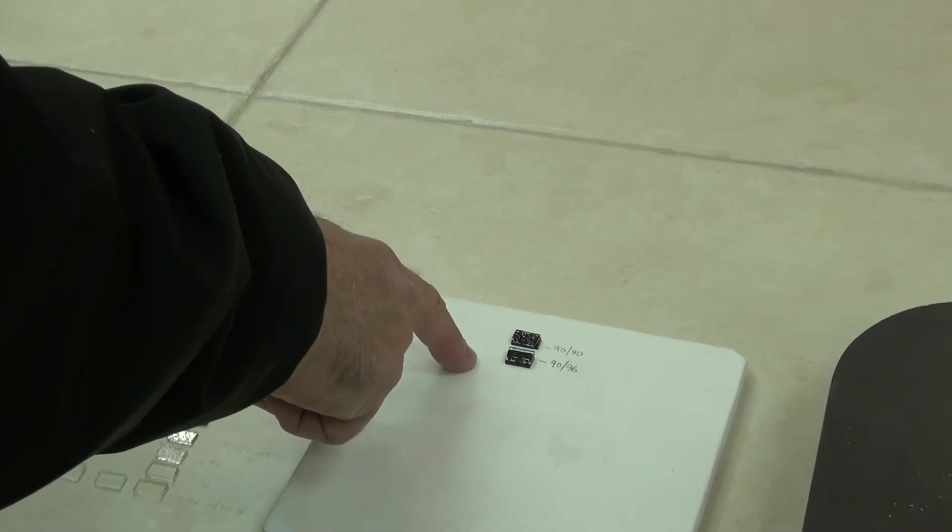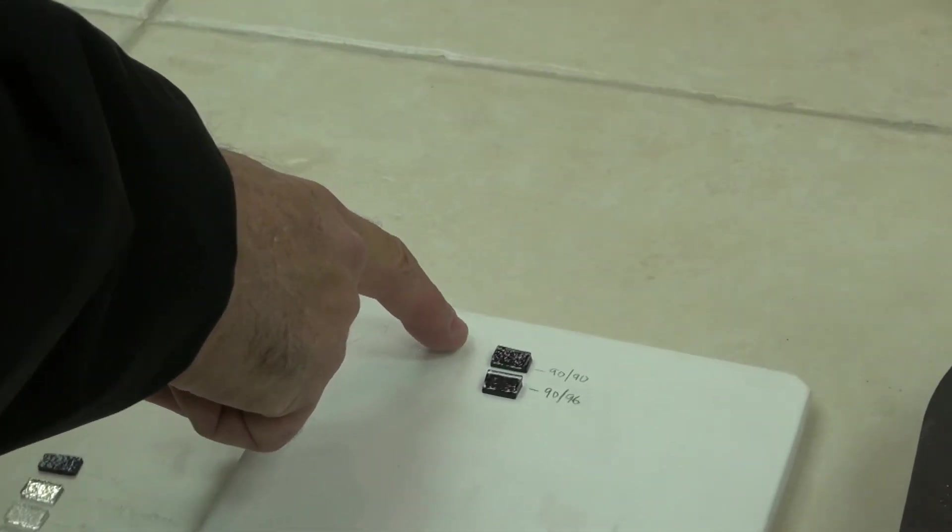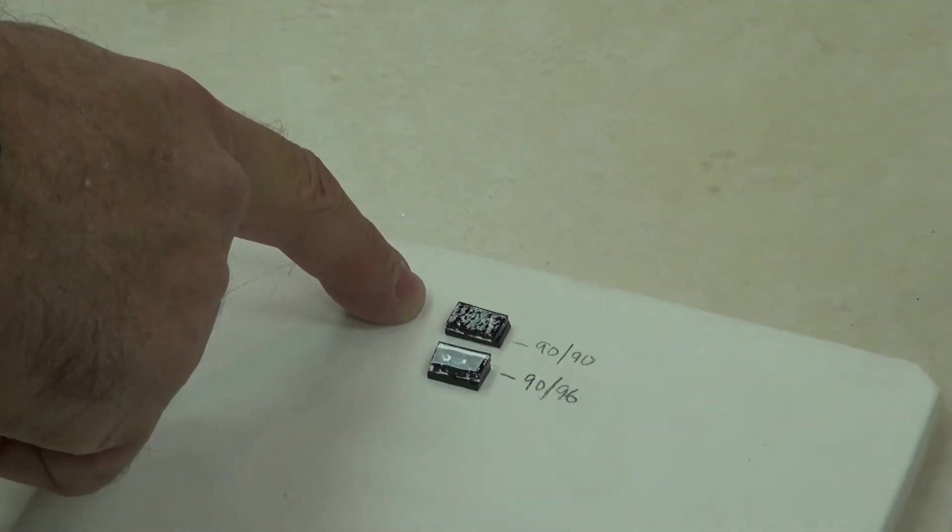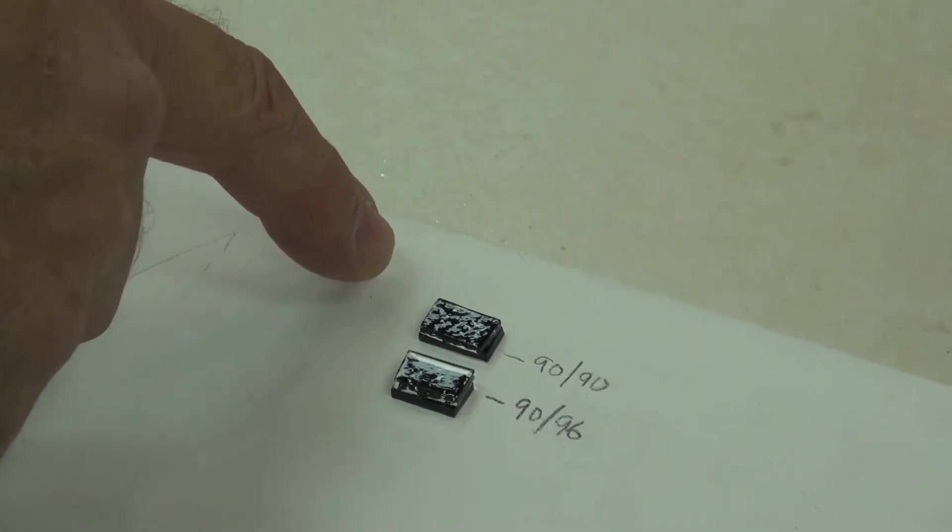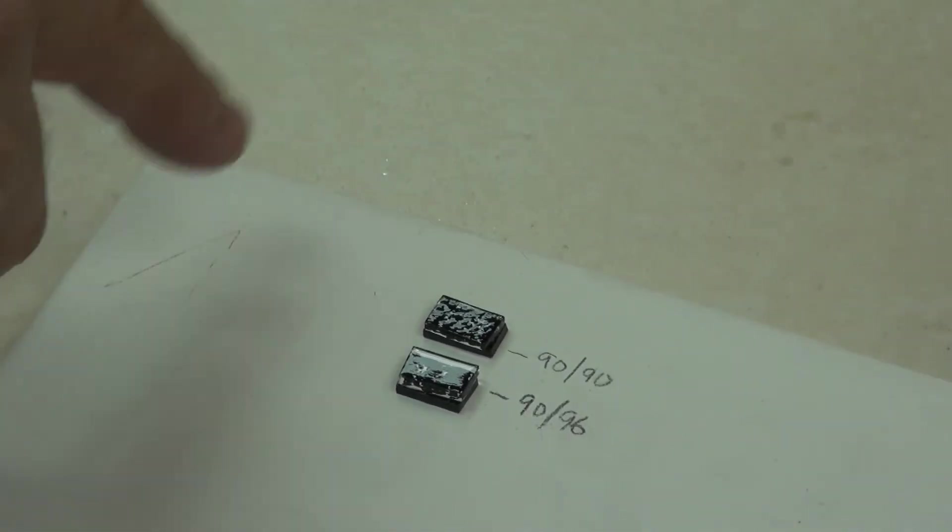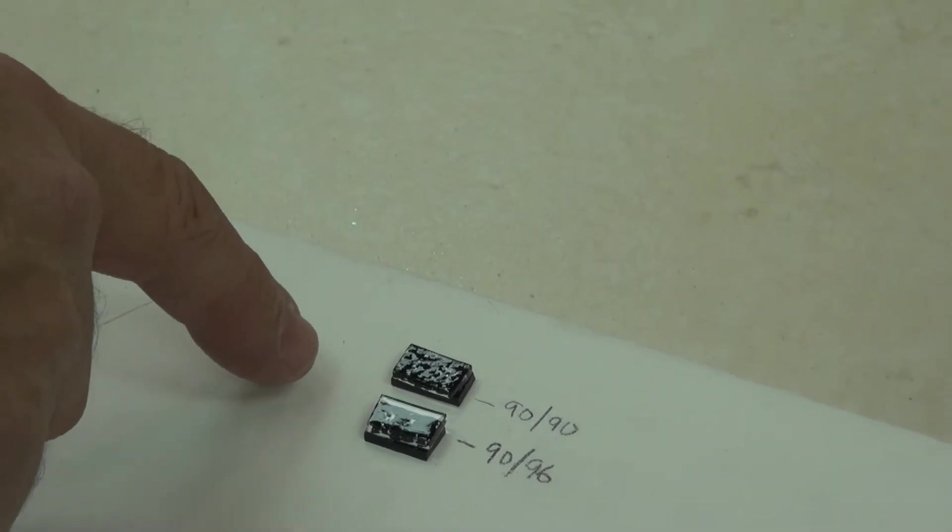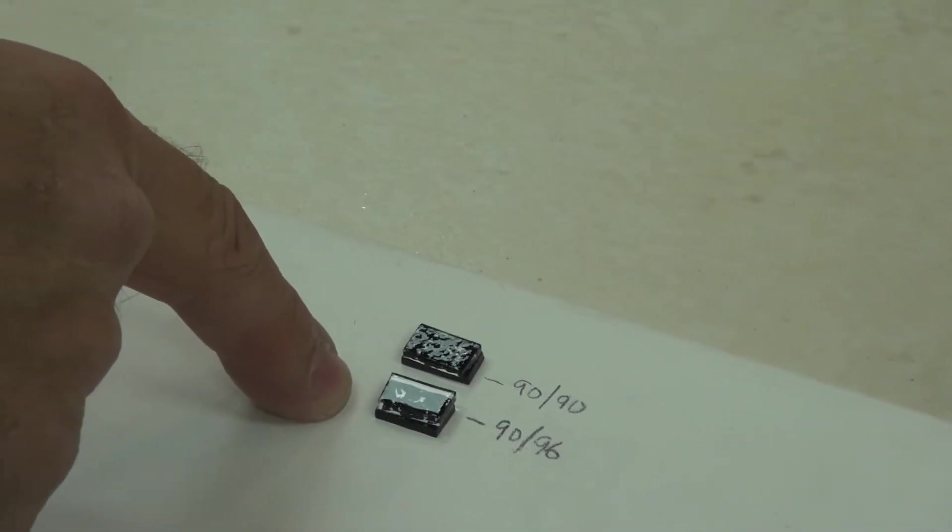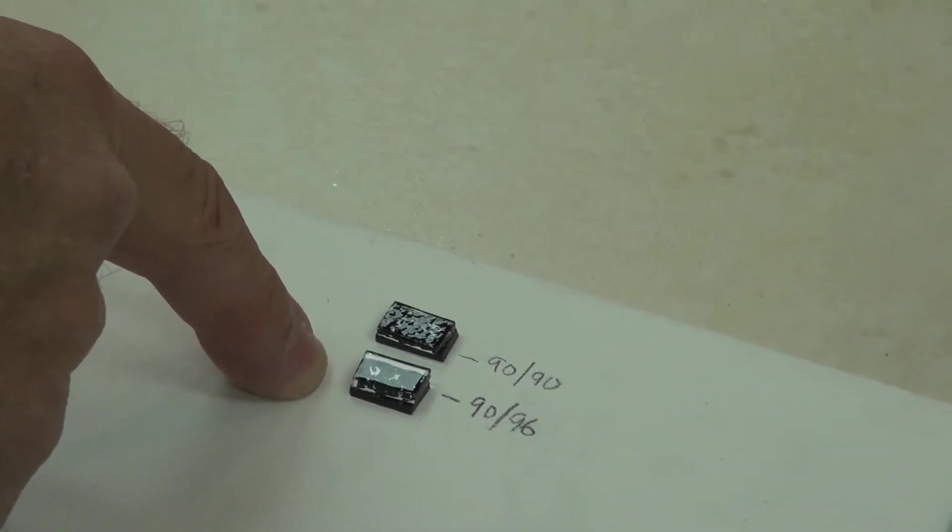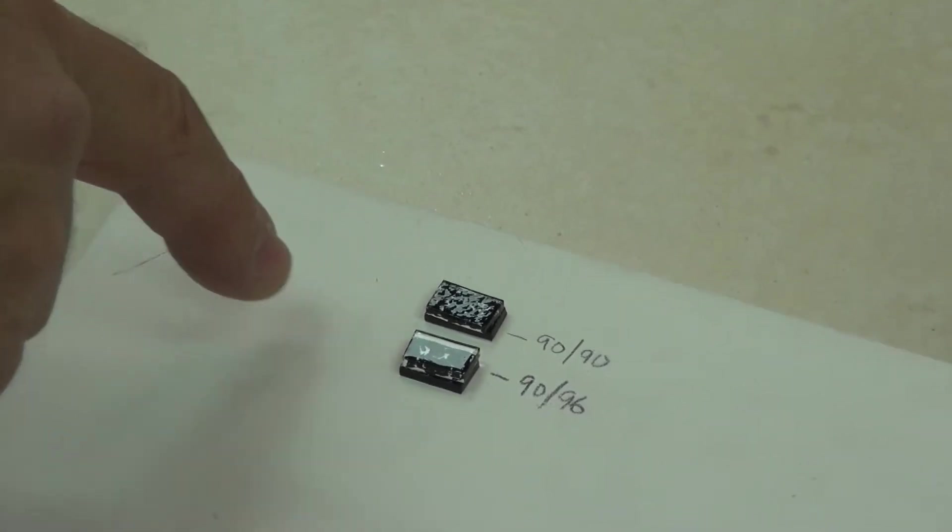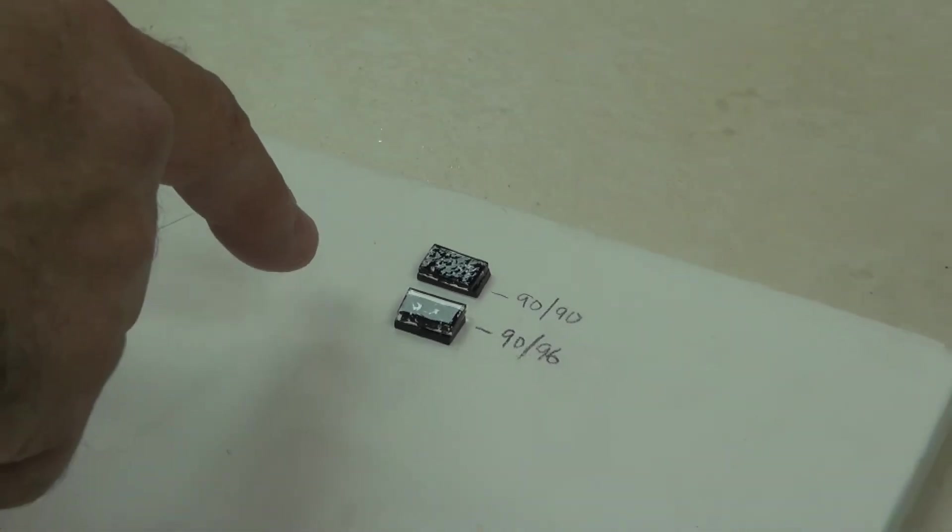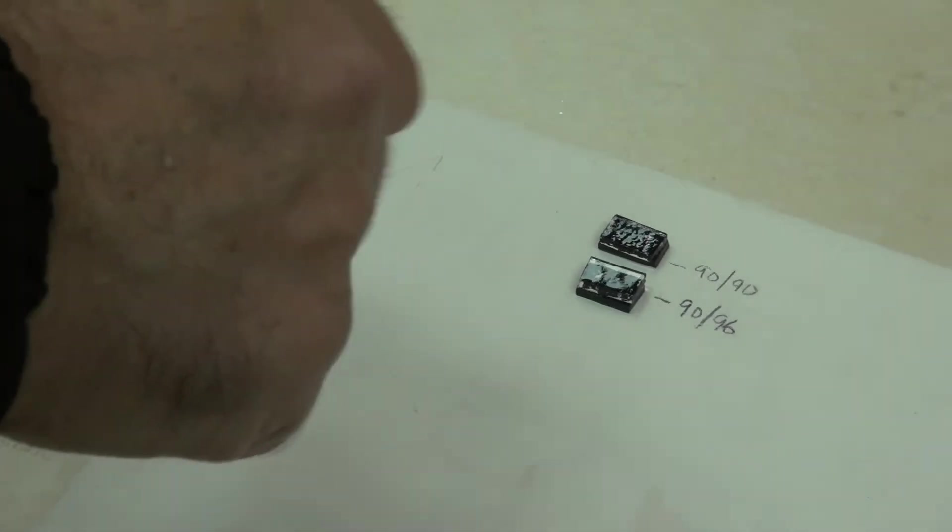Over here I've pre-fired two piles of glass. This is a 90 on 90. The base glass is black, the top glass is clear. It'll be easier to identify it after the pull as to which is which. The piece below it is 90 with a 96 top. So when I pull that, it should pull in a curve because the glass is not compatible.